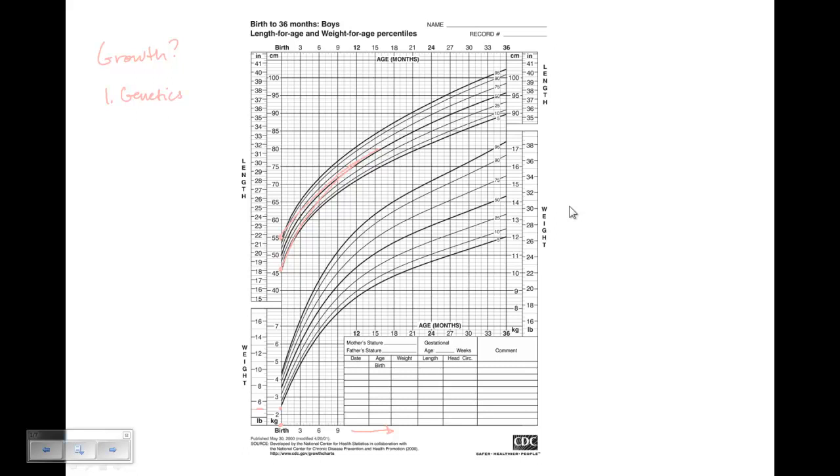The cards that are important for achieving your genetic potential: first of all, number one, normal amounts of hormones that are important for growing, and those are thyroid and growth hormone to a large extent.